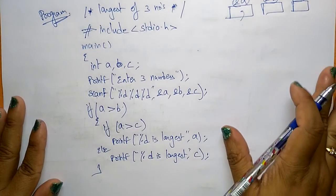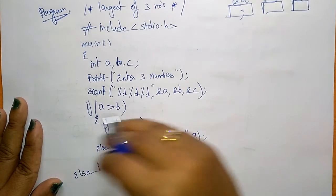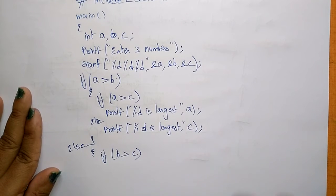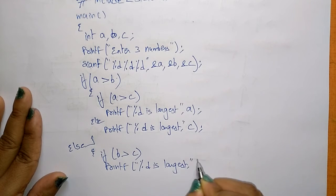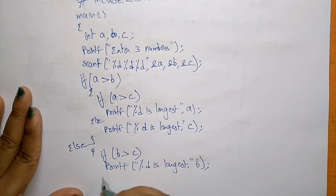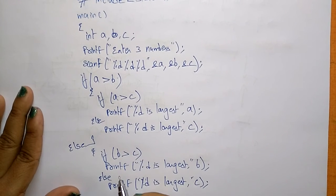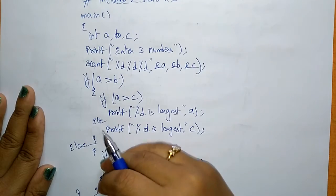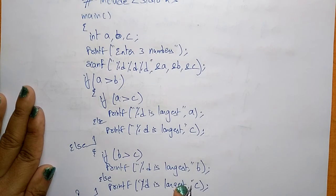Suppose a is not greater than b — then the complete if block is skipped and we enter the else block. Here it checks whether b is greater than c. If b is greater than c, printf '%d is largest' printing b. Else, printf '%d is largest' printing c. Then close the else statement and close the main block. This true block has a nested if inside it — true and false — and the false block also has if and else.